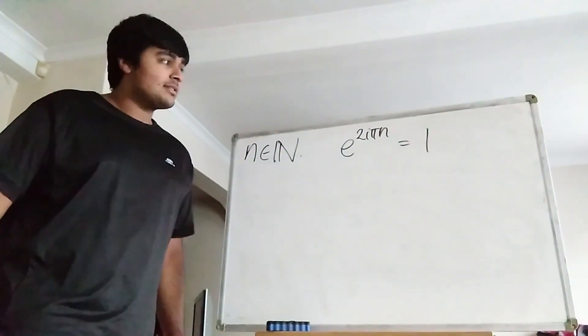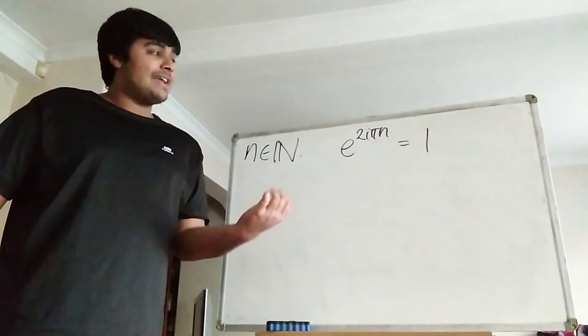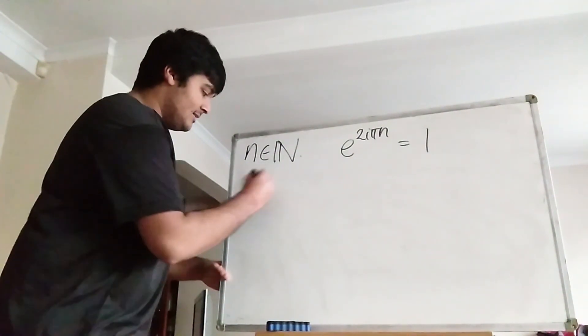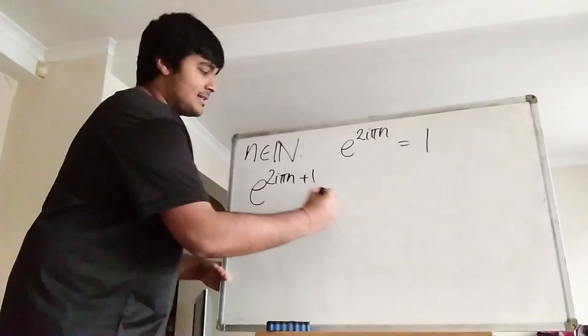Now what we're going to do is multiply both sides by e. So on the left hand side I get e times e to the 2i pi n, which of course is just e to the 2i pi n plus 1. So this is e to the 2i pi n plus 1, and the right hand side is just e.